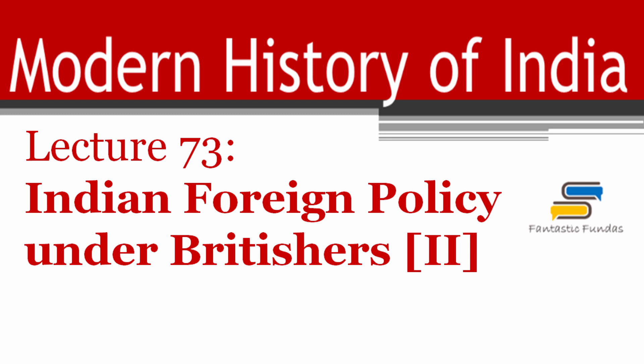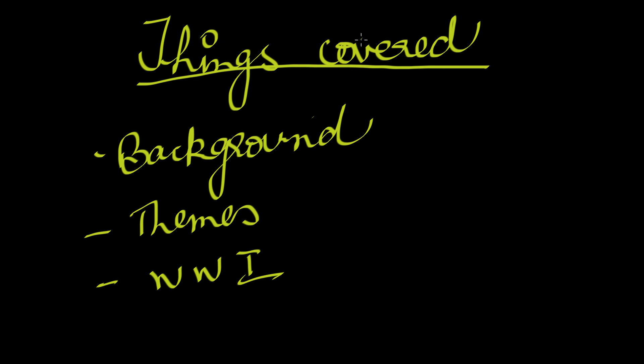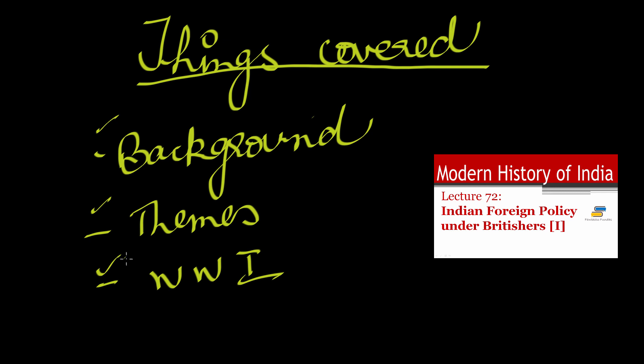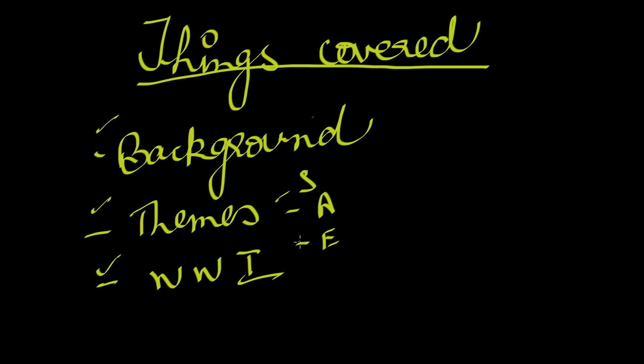Hello everyone, this is Gary from Fantastic Fundas. Today we are going to finish the topic of the development of the national foreign policy of India during the time of the British. In the last lecture we covered the background, themes, and World War One. We covered three themes: solidarity, Asian consciousness, and economy.